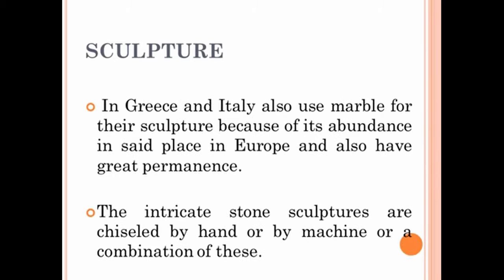Stones can be found in rivers, streams, and mountains. Minerals are usually found in mountains, while others can be found in rivers and streams. Stone is the medium most commonly used for sculpture. One type of stone is marble, which has the characteristics of being durable and resistant to fire and other hazards.